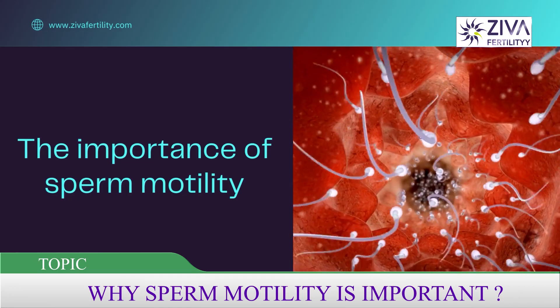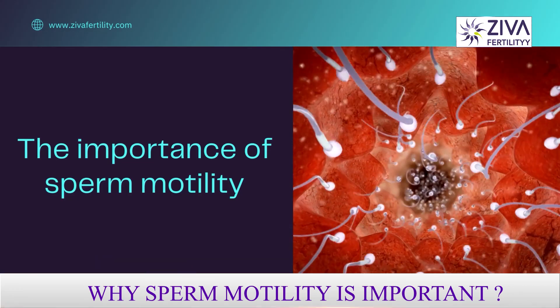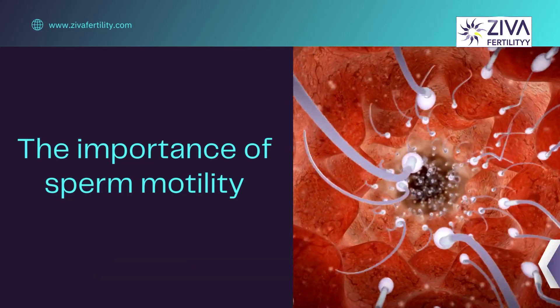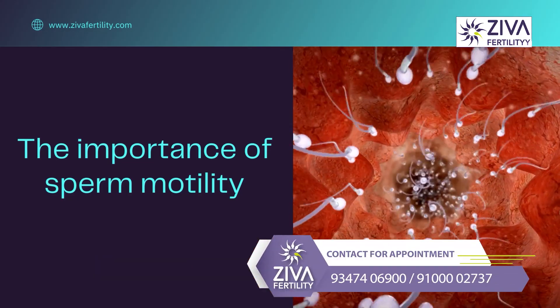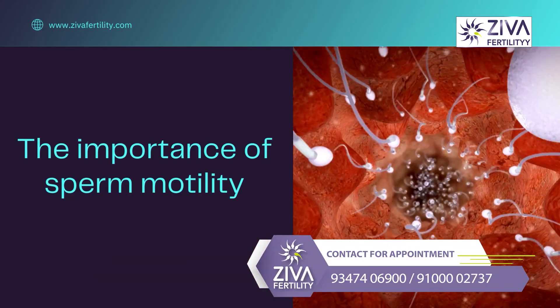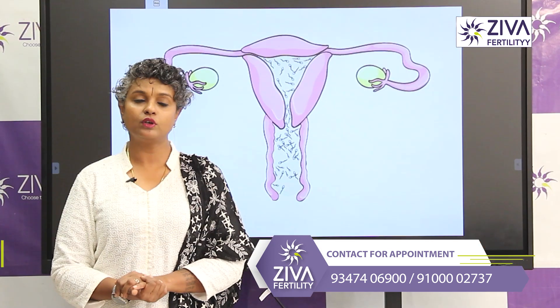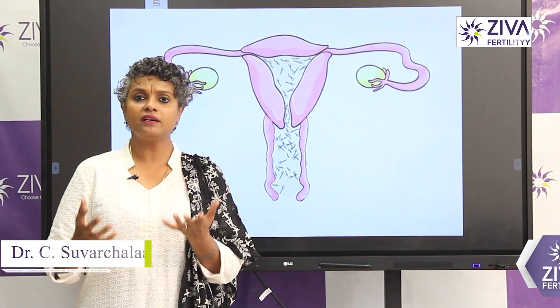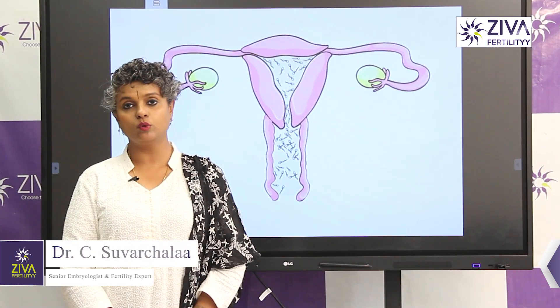Why is it that we look at sperm motility in particular, in addition to sperm concentration and morphology? What is the relevance of sperm motility?